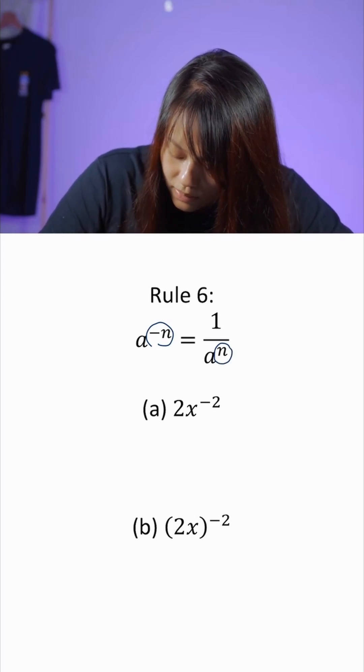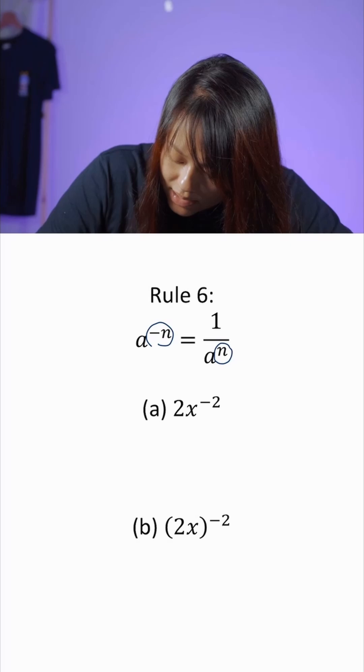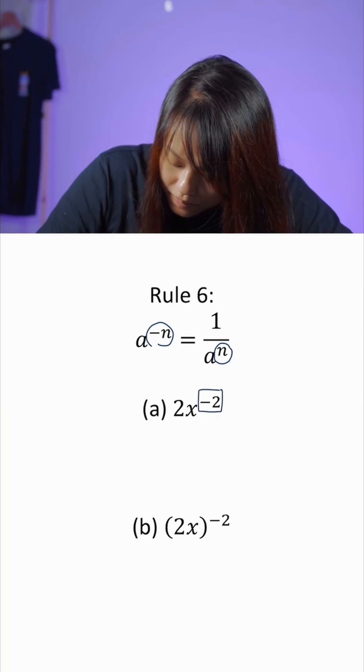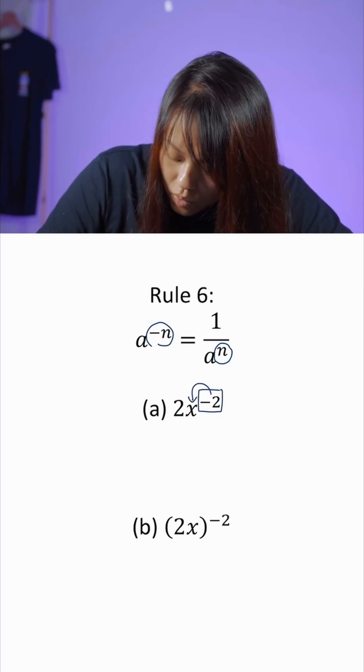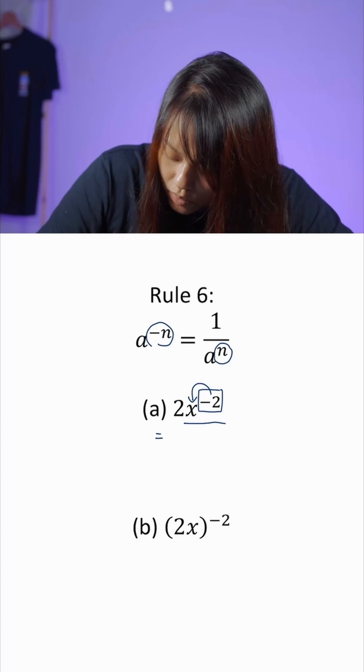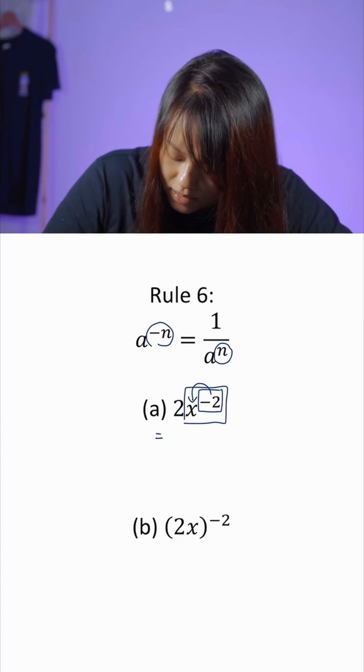We have 2x^(-2). We can see that this negative 2 is for the base x. So only this term will go down to the denominator.